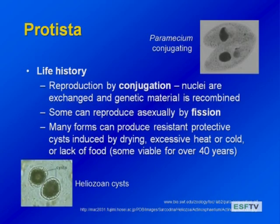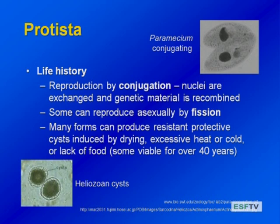They can reproduce in several different ways. Some reproduce sexually by conjugation — they'll exchange nuclei and genetic material, as seen in this paramecium conjugation image. Some can reproduce asexually by fission. And many forms can produce protective resting stages or cysts. Many of these single-celled organisms can produce cysts that are protected even when dried, or when exposed to excessive heat or cold. Some have been found to be viable for well over 40 years; they can rest in the sediments and then regenerate populations later.